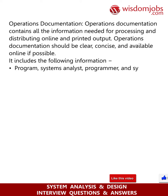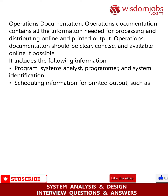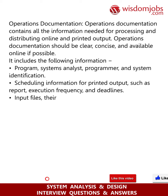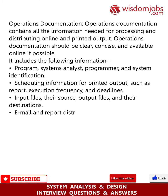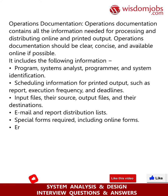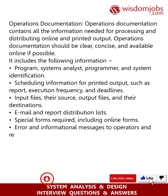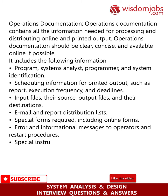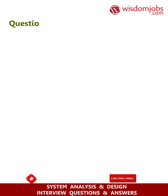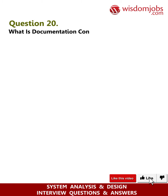Operations documentation contains all information needed for processing and distributing online and printed output. It should be clear, concise, and available online if possible. It includes: program, systems analyst, programmer, and system identification; scheduling information for printed output such as report execution frequency and deadlines; input files and their sources; output files and their destinations; email and report distribution lists; special forms required including online forms; and error and informational messages to operators and restart procedures.